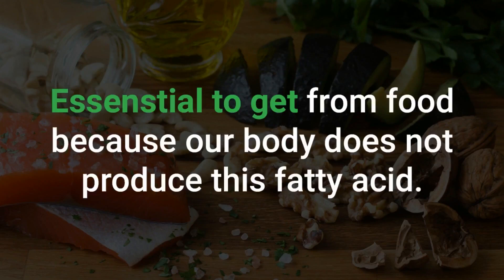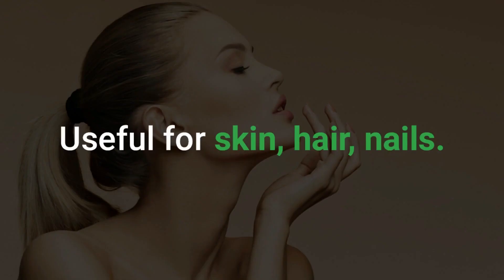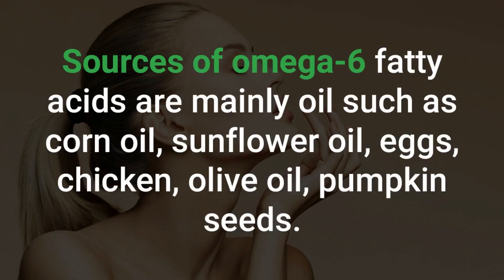The second polyunsaturated fatty acid is omega-6, also essential to get from food because our body does not produce it. It is useful for skin, hair, and nails. Sources of omega-6 fatty acids are mainly oils such as corn oil, sunflower oil, as well as eggs, chicken, olive oil, and pumpkin seeds.